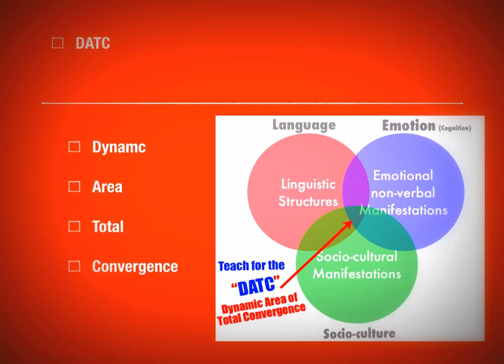The next acronym is DATC — or more specifically, teaching for the DATC. DATC stands for Dynamic Area of Total Convergence. We're talking about the different networks in the brain. The neuromyth says we only use 10% of the brain — that's hogwash. We use the whole brain. If we didn't use 90% of it, that 90% would atrophy and wither away. We use 100% of the brain, just not 100% at every second.